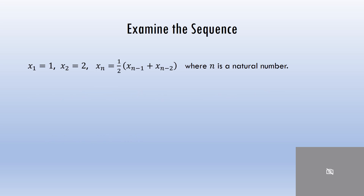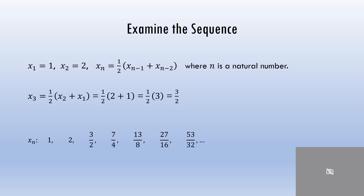Let me show you how to use the definition to find the next term in the sequence. We already have 1 and 2, and now we're going to use those to find x sub 3. So x sub 3 equals one-half of x sub 2 plus x sub 1, which is one-half of 2 plus 1, giving us 3 halves. Continuing on, the sequence gives us 1, 2, 3 halves, 7 fourths, 13 eighths, 27 sixteenths, and 53 over 32.